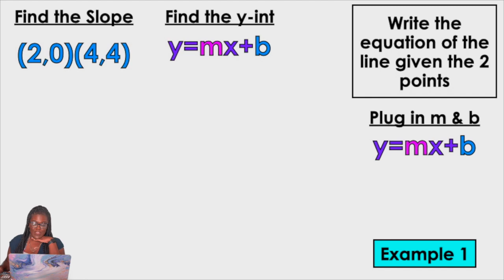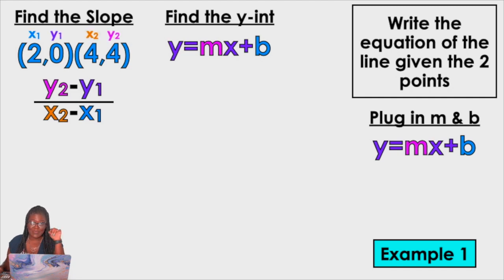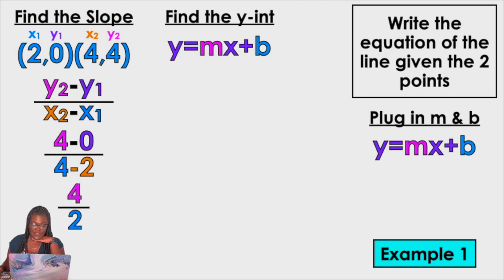Find the slope. If I have two points, 2 comma 0 and 4 comma 4, I'm going to find the slope using the slope formula: Y2 minus Y1 over X2 minus X1. I labeled the points X1, Y1, X2, Y2. So 4 minus 0 over 4 minus 2 gives us 4 over 2, which equals 2. So M equals 2.